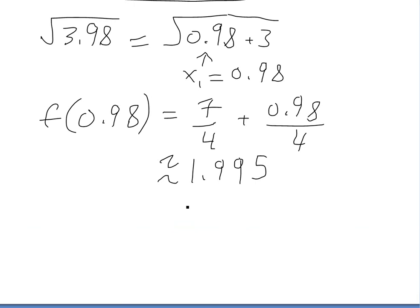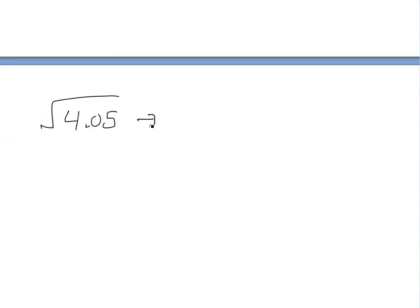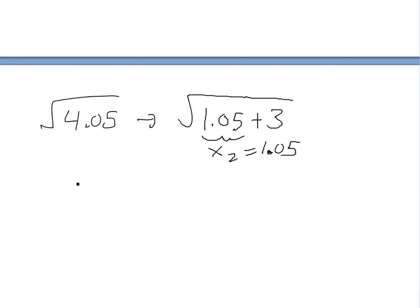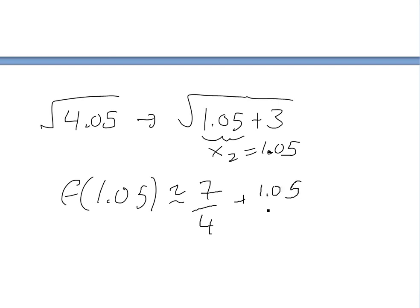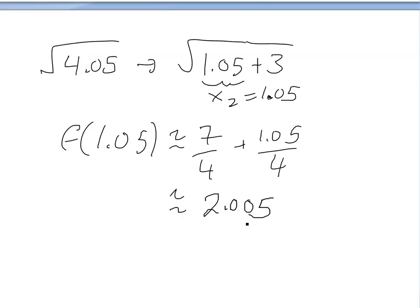Now for 4.05: we need x+3 = 4.05, so x = 1.05. Plugging in: f(1.05) ≈ 7/4 + 1.05/4. Plugging this into the calculator gives approximately 2.0125.